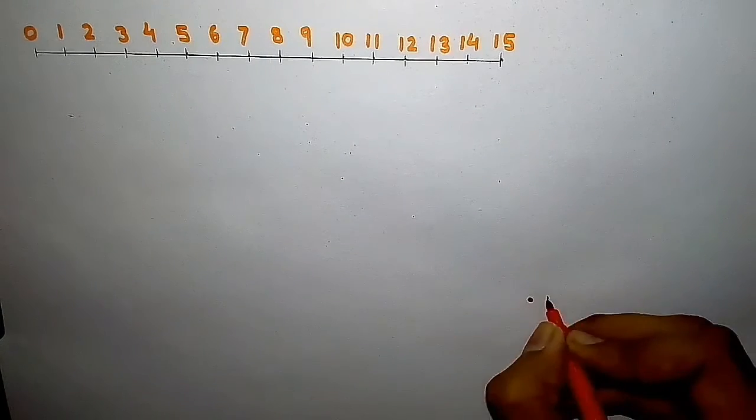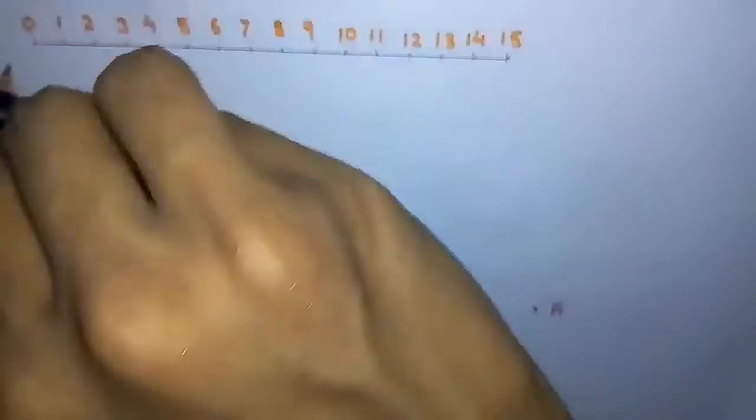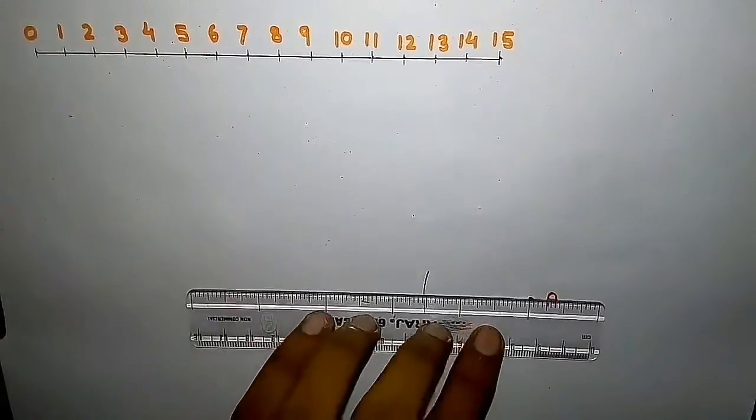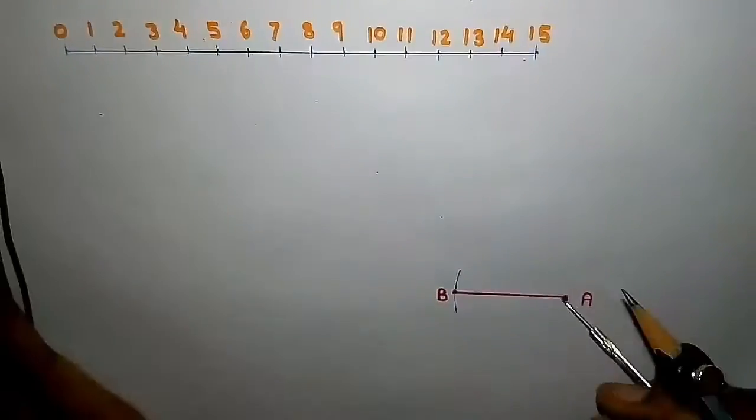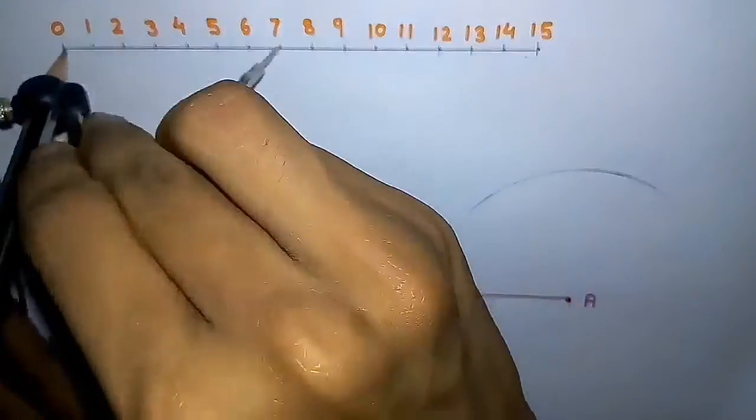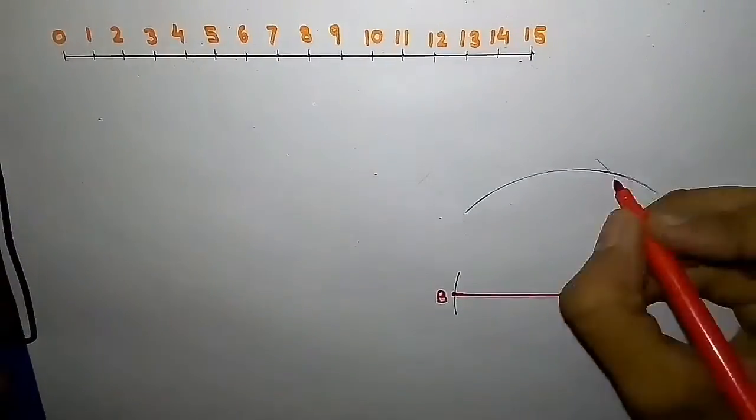Mark a point A, cut an arc of radius 4 centimeters and draw a line AB. Now cut an arc of radius 5 centimeters from A and 7 centimeters from B, and name the point of intersection of the arcs C. Join AC and BC.